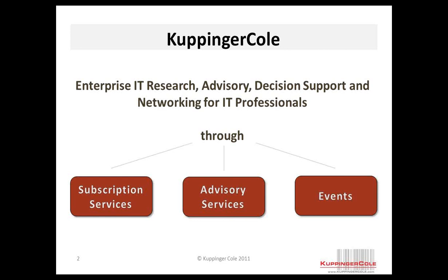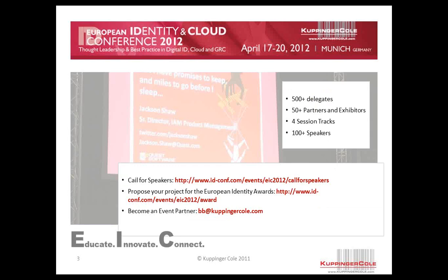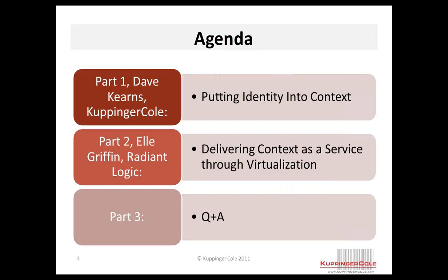I recently joined the organization, although I have worked with them for a number of years on various projects. At CouppingerCoal.com you can find out more about the organization. Primarily in the spring, we deliver the European Identity and Cloud Conference — this year in April in Munich. It is by far the biggest and best identity conference in Europe. Today's agenda: I'll be talking about what context means to identity, then Elle Griffin from RadiantLogic will tell us about delivering context as a service, and we will have Q&A at the end.